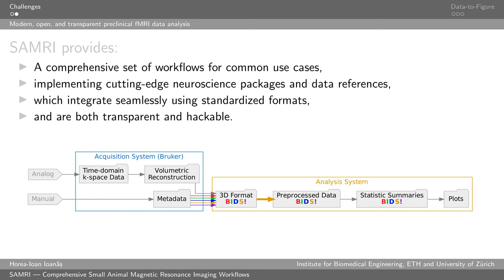Samurai consists of a comprehensive set of workflows. It implements cutting-edge neuroscience packages and data references, and they integrate seamlessly using standardized formats. What you can see at the bottom is an overview of the provenance graph of all of the stages at which Samurai operates. The colorful elements represent a standard which accompanies the processing throughout the entire duration, meaning that at any point in this process, data can be plugged in or taken out.